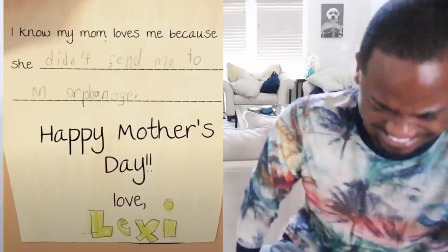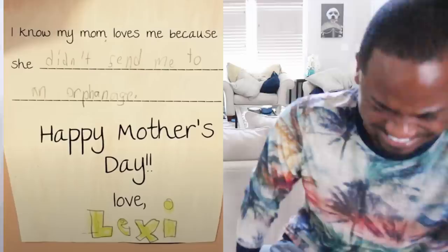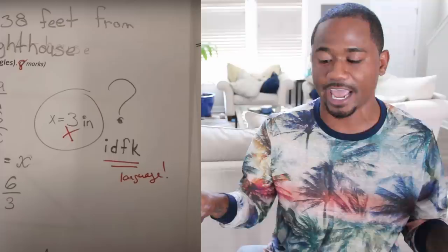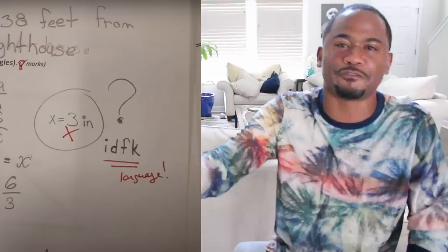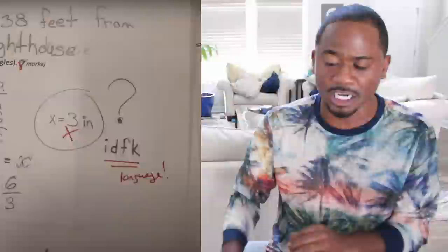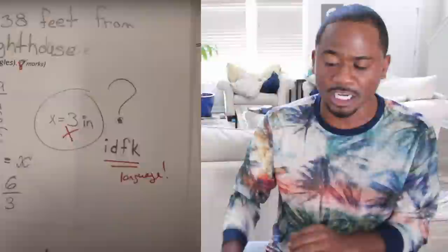Something tells me Lexi really meant every single word. This one says x equals three inches and then wrote 'IDFK.' The teacher put a red x on the circled answer with two underlines under those four letters and said 'language.'